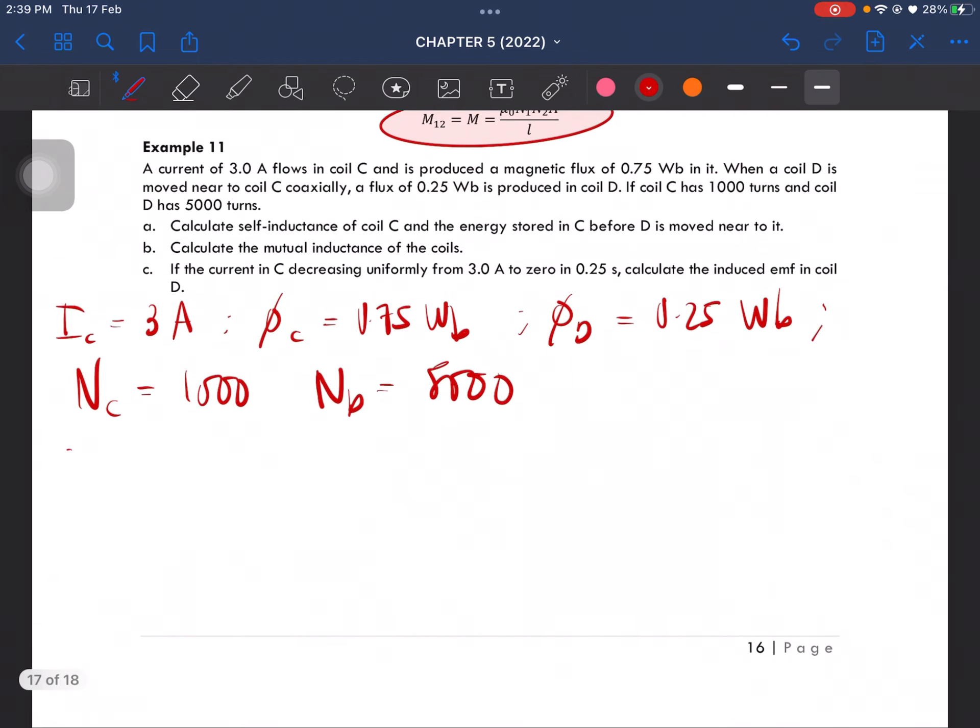So from this we are going to calculate the self-inductance of coil C, that is just Nc phi c over Ic. So this is going to give us 250 Henry as the self-inductance of coil C.